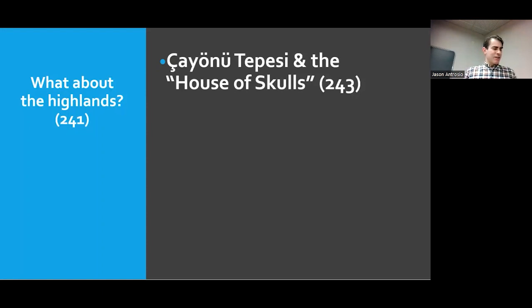The House of Skulls earned its name because it was found to hold the remains of over 450 people — including headless corpses and over 90 crania all crammed into small compartments. Cervical vertebrae were attached to some skulls, indicating they were severed from fleshed but not necessarily living bodies. Most of the heads were taken from young adults or adolescents in the prime of life, and 10 from children. The skulls were left bare with no trace of decoration.